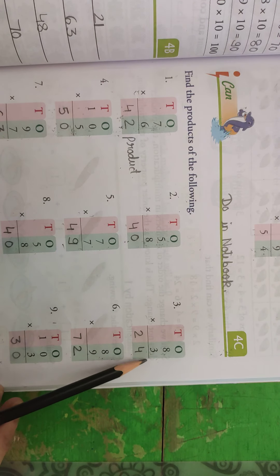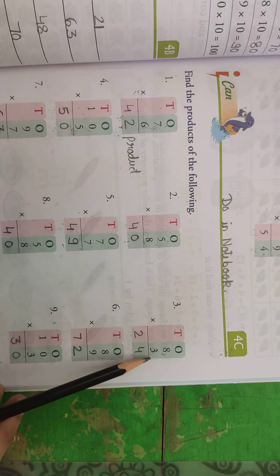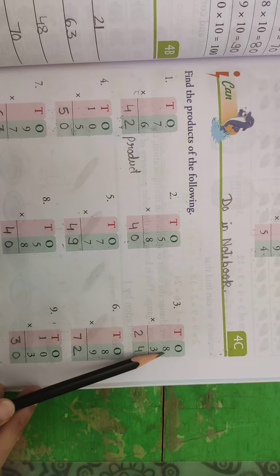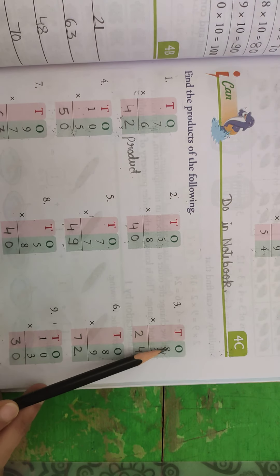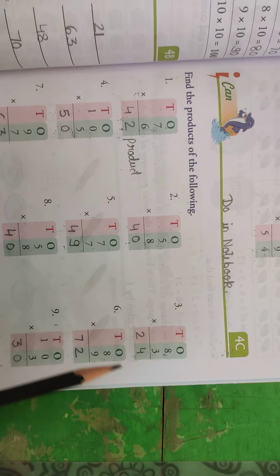Then, again, tens once, so 8 multiply by 3, to abh hume 3 ki table ko kahaan tak bolna hai, 8 tak. Okay, so 3 8s a, 24.